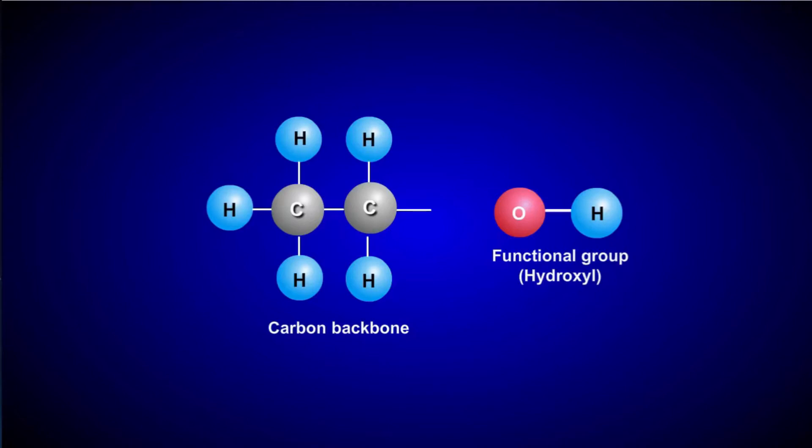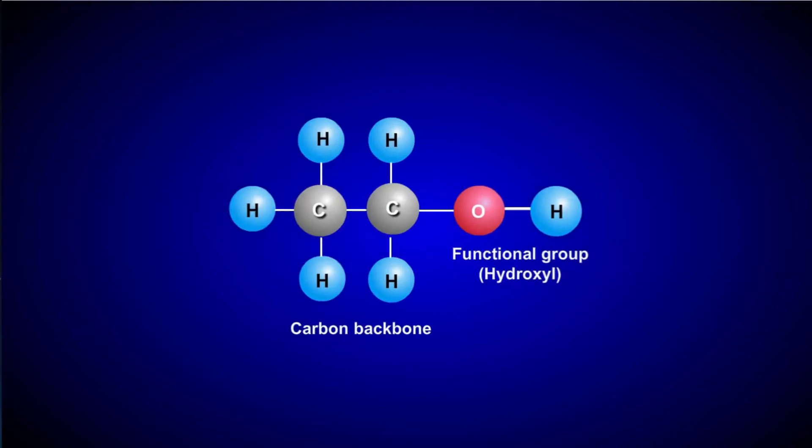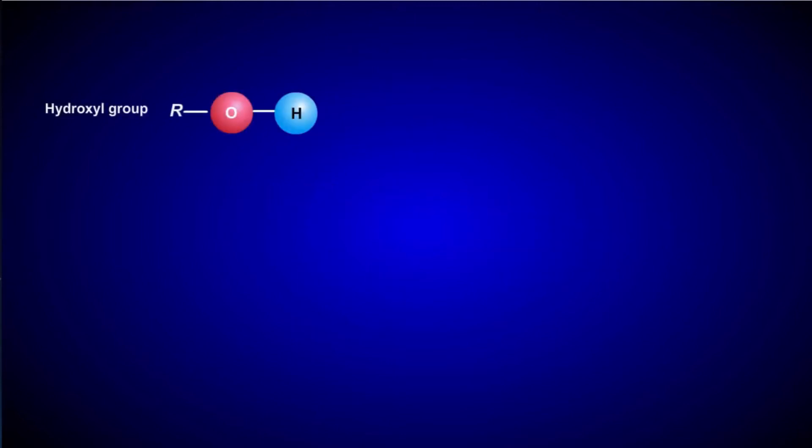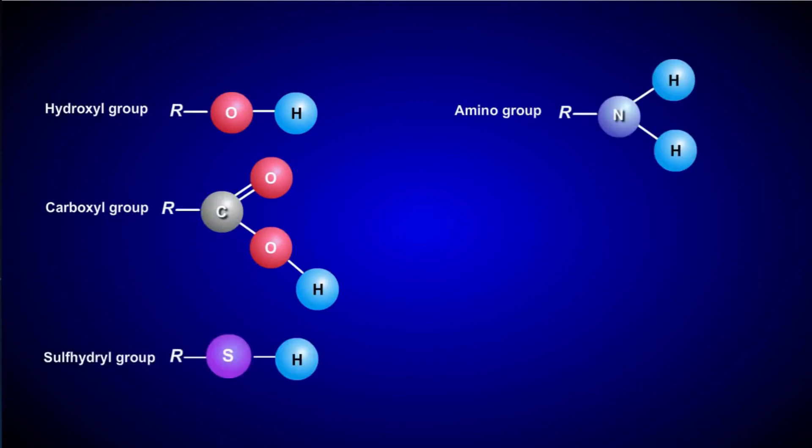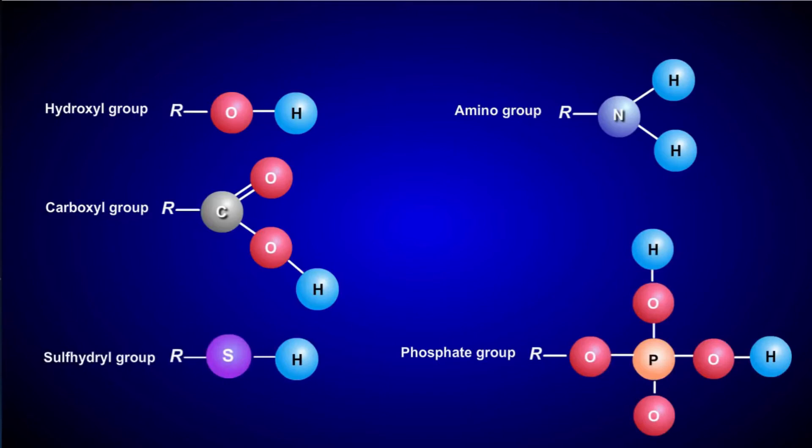The functional group shown here is a hydroxyl group, and when it attaches to this carbon skeleton, the compound ethanol is formed. There are many different types of functional groups in biology. The five that you will probably come in contact with the most are the hydroxyl group, the carboxyl group, the amino group, the sulfhydryl group, and the phosphate group.